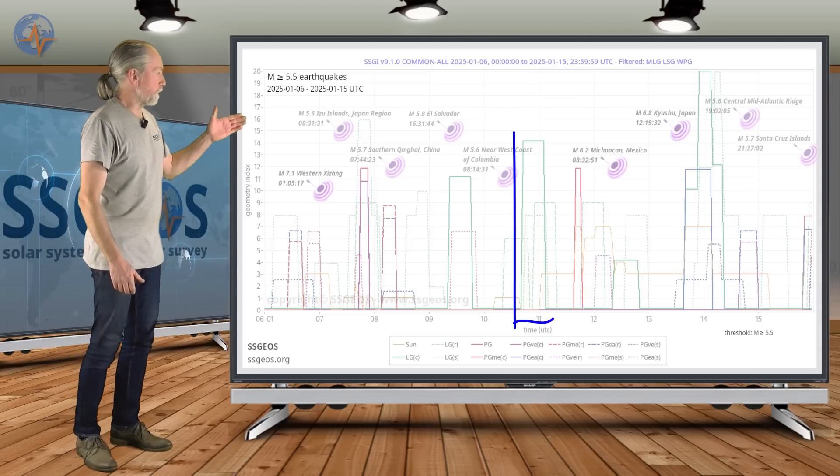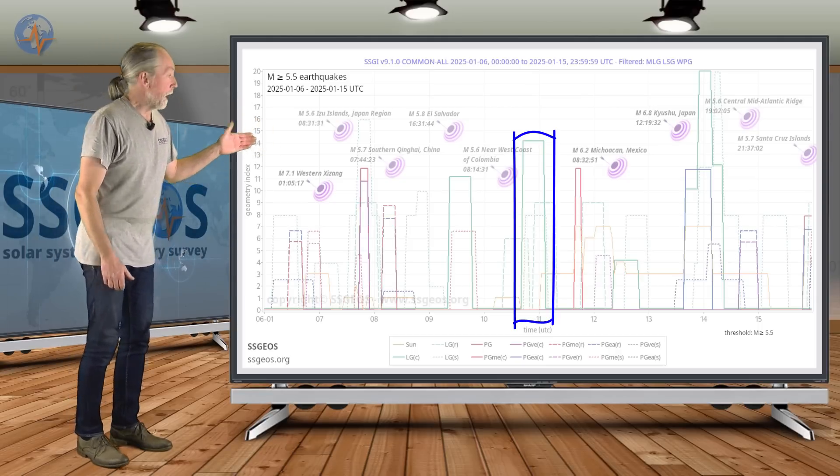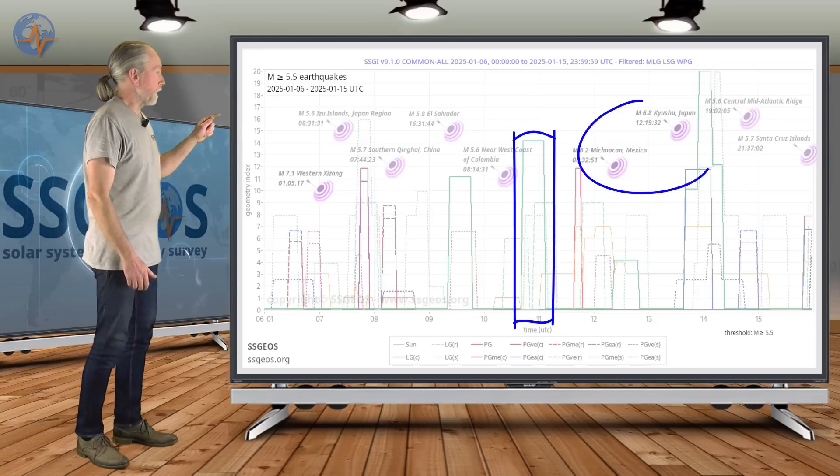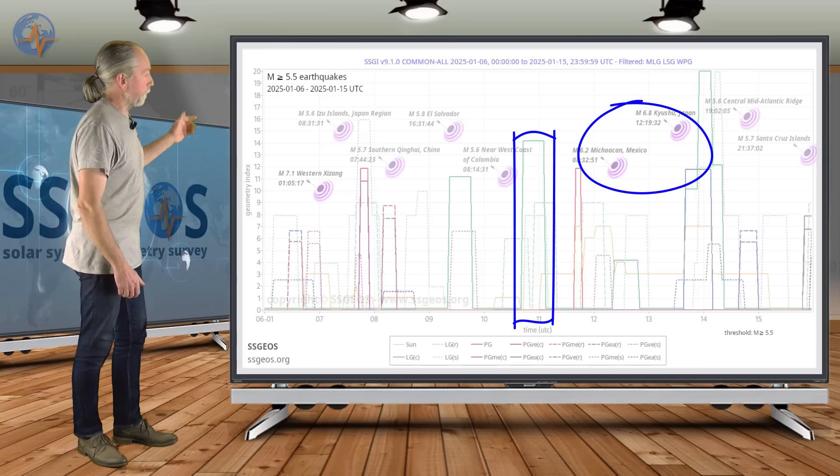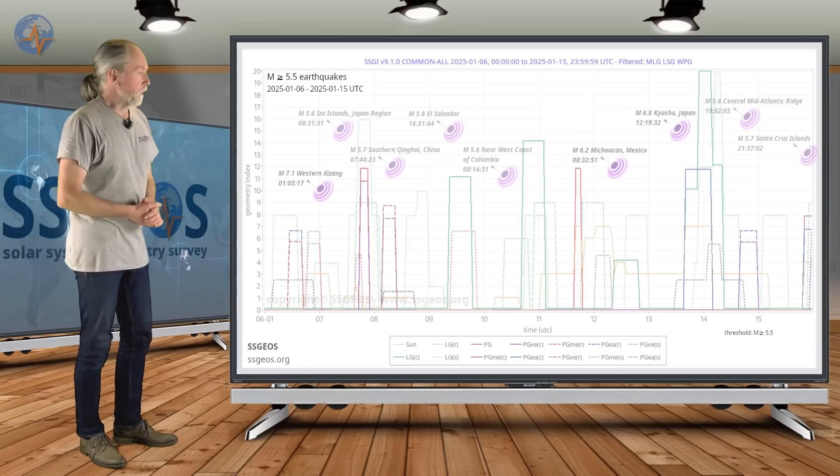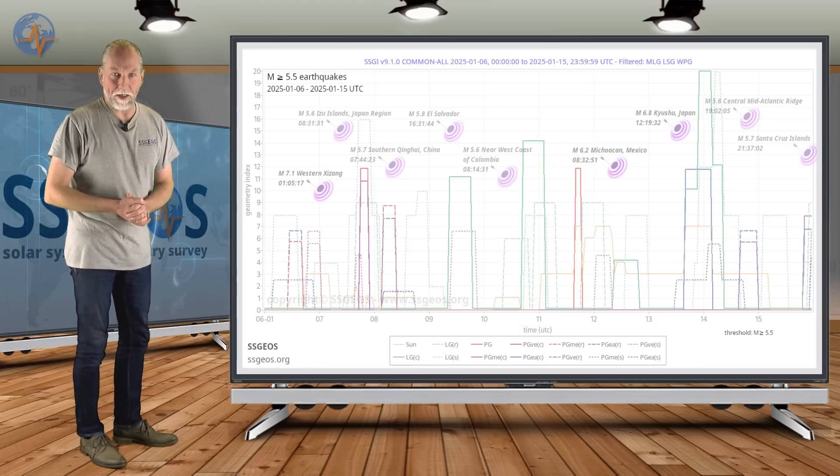As I explained, because of the lunar conjunction with Jupiter on the 11th, we indeed see 6.2 in Mexico on the 12th and then on the 13th 6.8 at Kyushu, Japan. That's the largest seismic activity that we had.